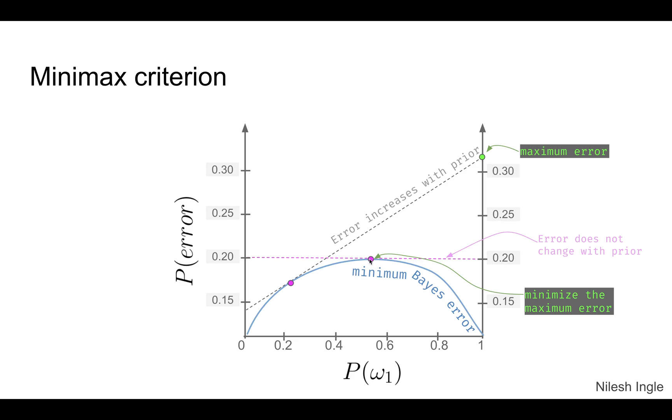If we select a point such as this one where if we draw a tangent the slope is zero, so even if we increase the prior from zero to say one in this case, the magenta line stays constant at 0.02 error. And so the Bayes error does not increase as the prior probability increases, and so that's the takeaway message for the minimax criteria.